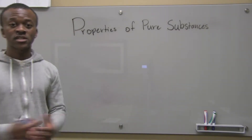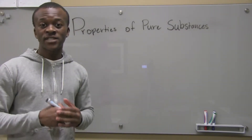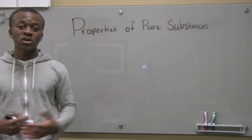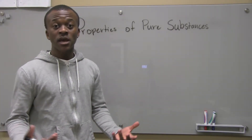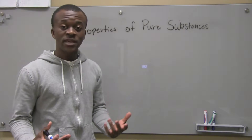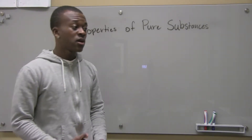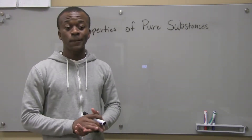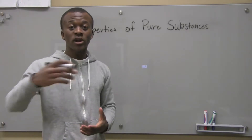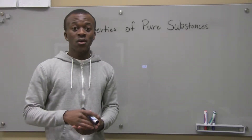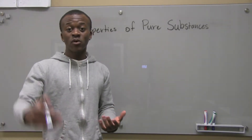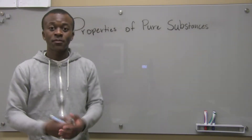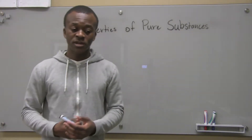A pure substance is a substance that has a fixed chemical composition throughout. It's important to note that a pure substance might be composed of more than one chemical. For example, helium is a pure substance, but water can also be considered a pure substance. Water is made of both hydrogen and oxygen, so that can also be considered a pure substance.